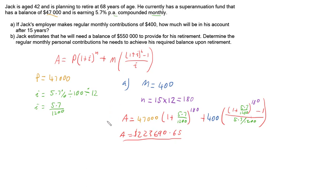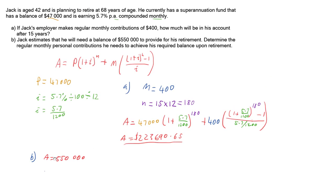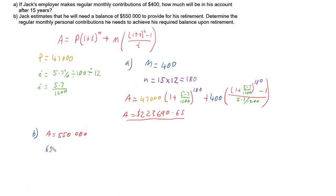So now let's have a look at part B. Part B changes things slightly. We now know that our final amount that we want is $550,000, and we're going to want it by the time we retire. Jack is currently 42, and he's planning on retiring at 68. So we've got 68 minus 42, means that we have 26 years until Jack plans on retiring.